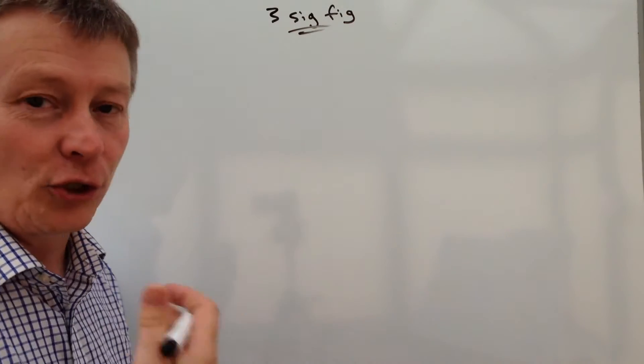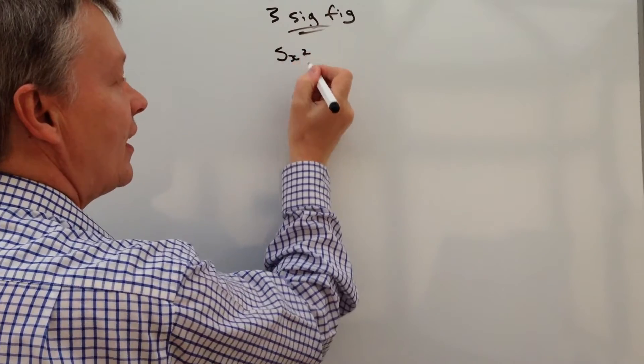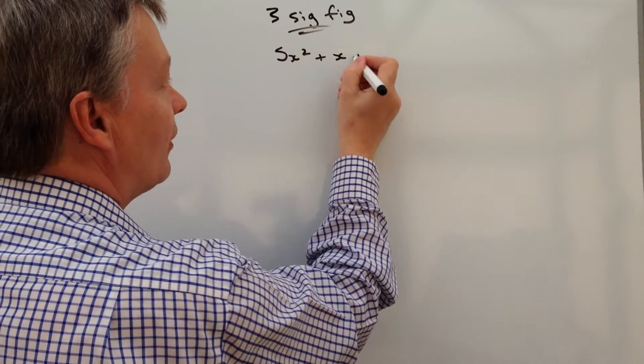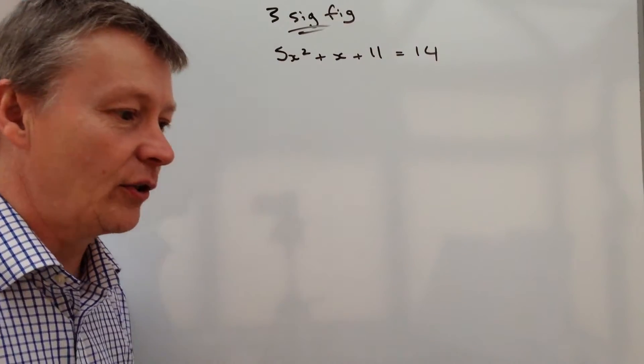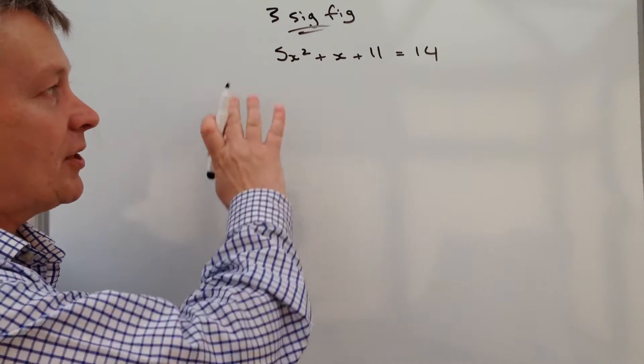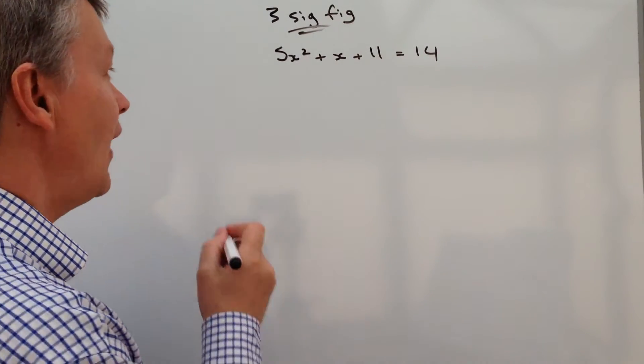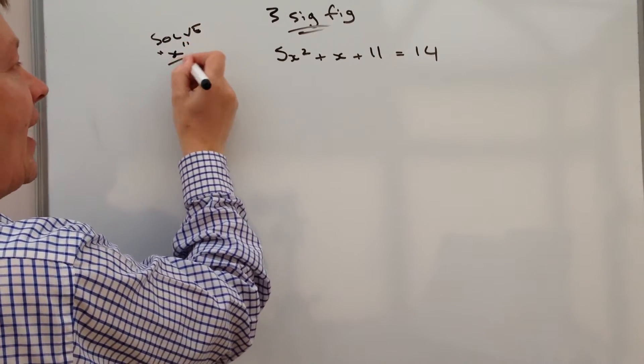Let me give you a typical exam paper question, round about grade A or grade B on quadratic equations. The telling point is it will say solve to three significant figures, and as soon as you see that you know you're going to need to use the quadratic equation. They're asking you to solve 5x² + x + 11 = 14, so find the value of x.